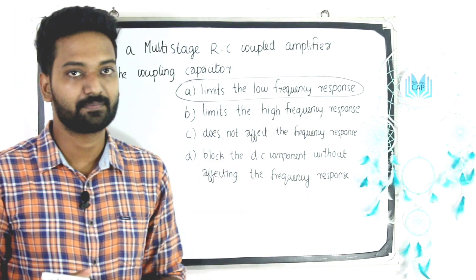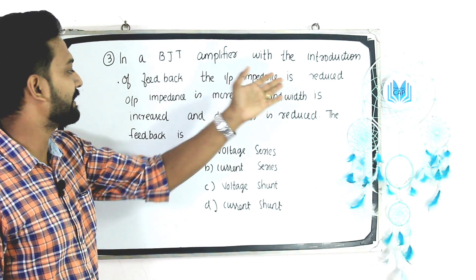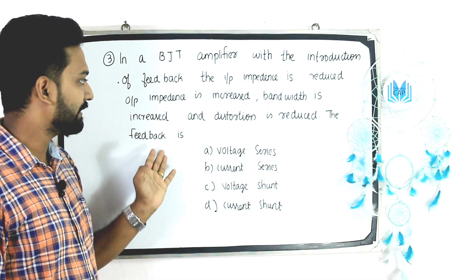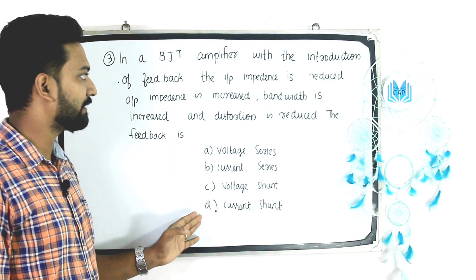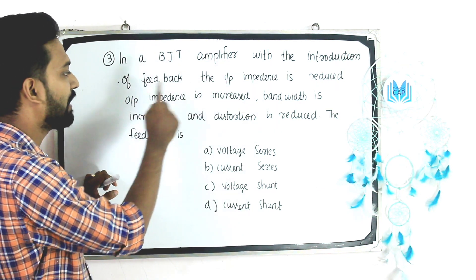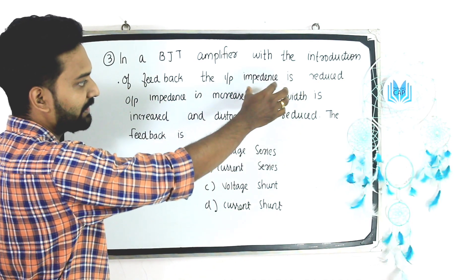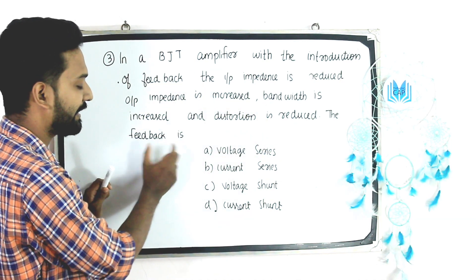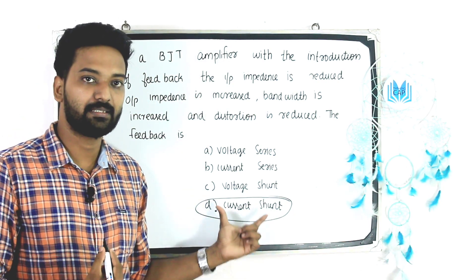Question 3: In a BJT amplifier with the introduction of feedback, the input impedance is reduced, output impedance is increased, bandwidth is increased, and distortion is reduced. The feedback type is: voltage series, current series, voltage shunt, or current shunt. The answer is current shunt.